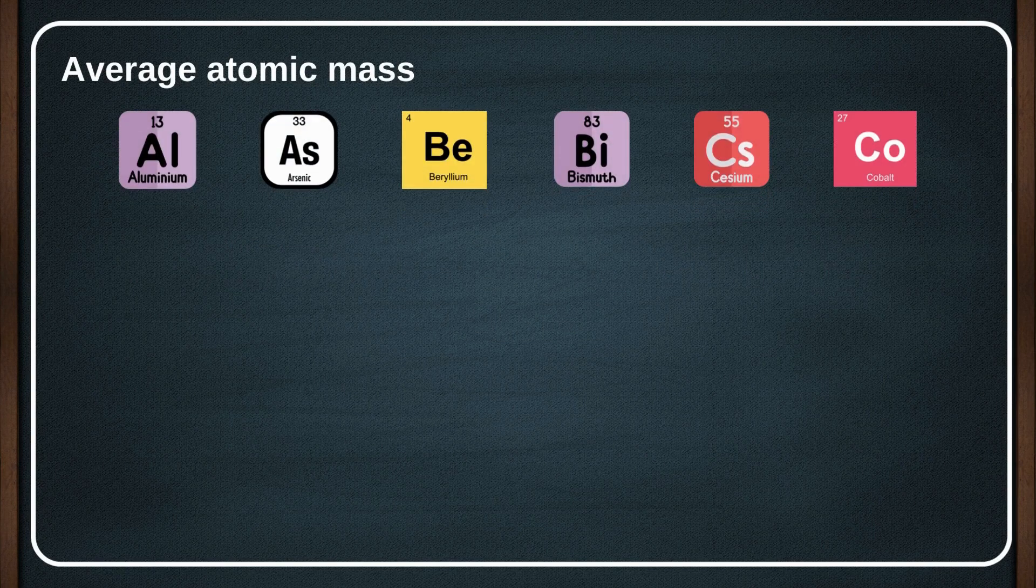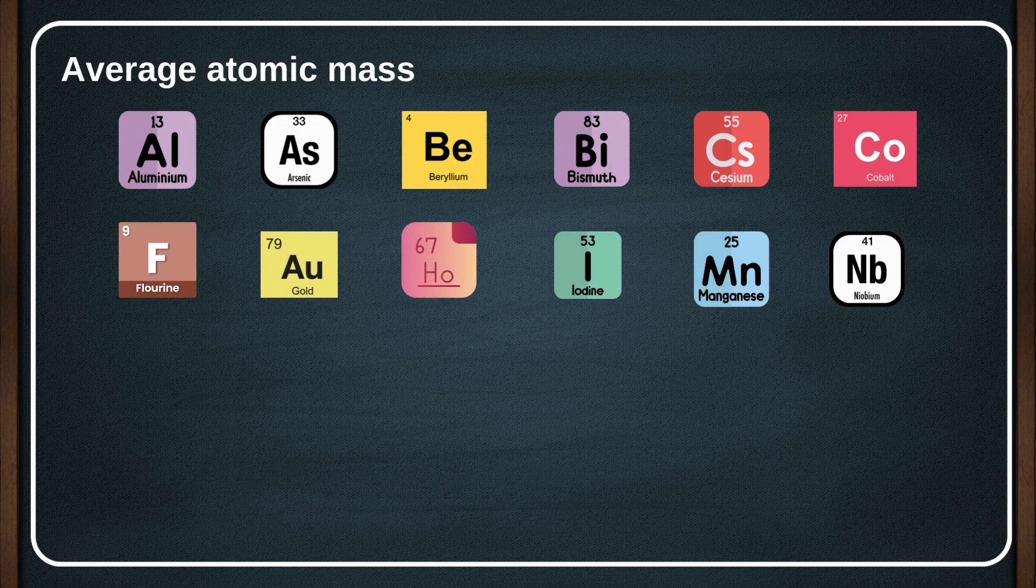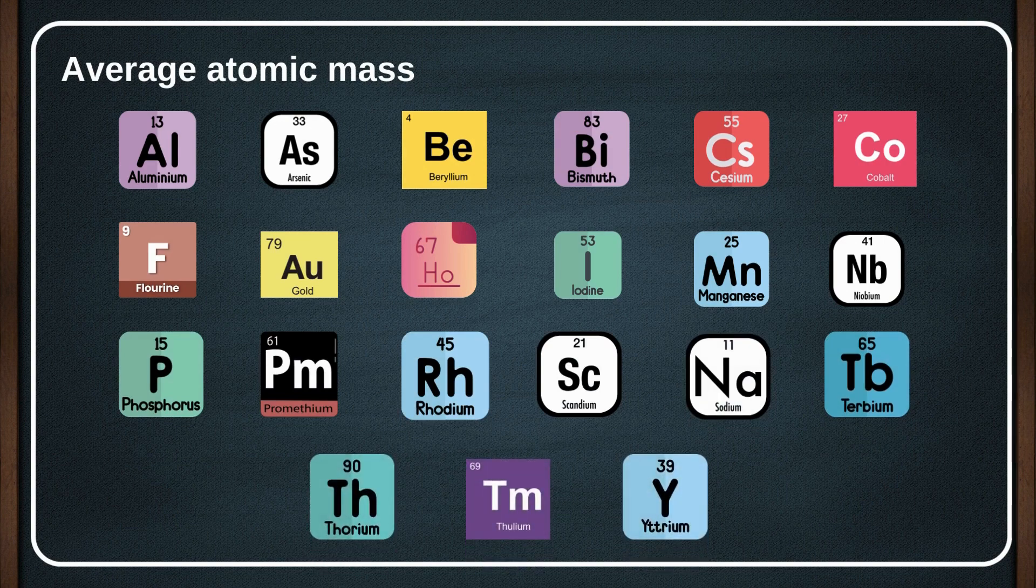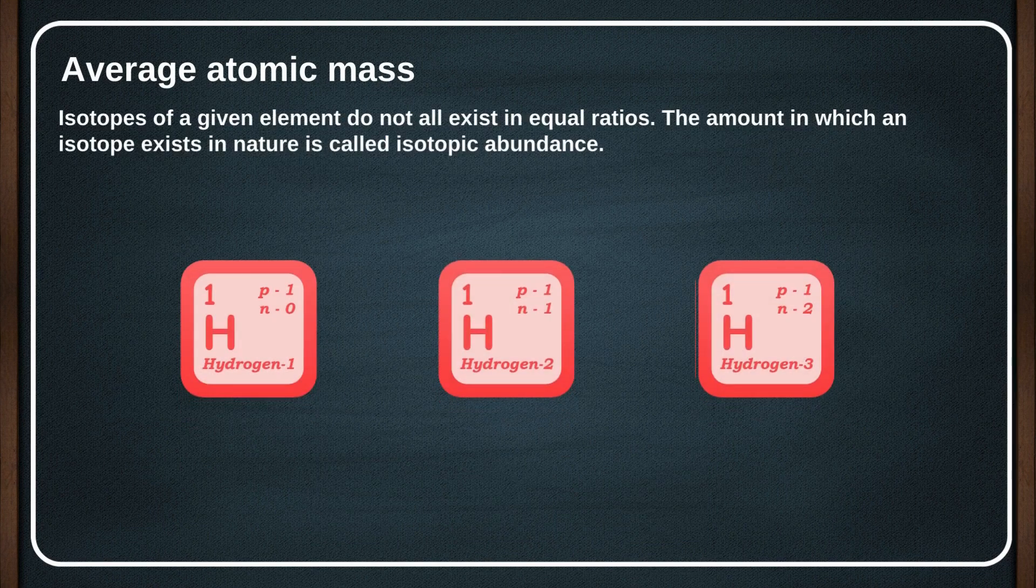Of all the elements on the periodic table, only 21 elements have only one naturally occurring isotope. Other elements can have at least two or more isotopes.